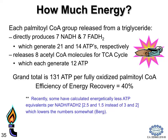For each palmitoyl-CoA generated from a triglyceride, this cycle yields seven NADHs and seven FADH2s. The NADHs generate three ATPs each and the FADH2 two ATPs each. With the release of eight acetyl-CoAs generating 12 ATPs per acetyl-CoA, this gives a grand total of 131 ATPs from a palmitoyl-CoA. The recovery of energy calculated for 131 ATPs corresponds to about 40% of the energy contained in a palmitoyl-CoA by calorimetry.